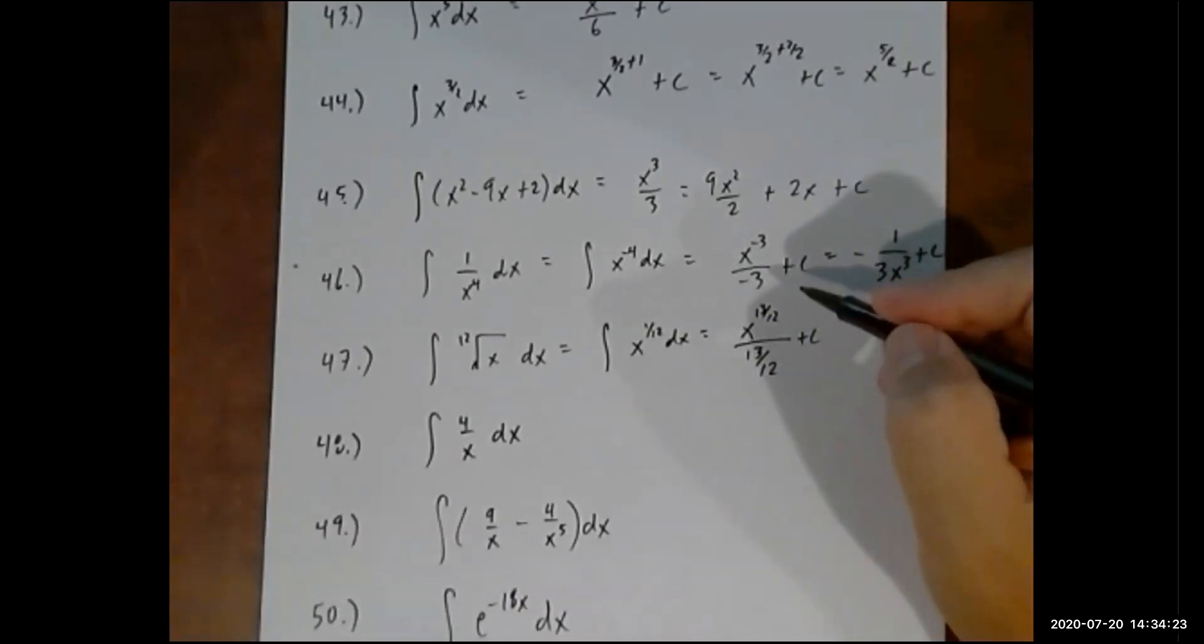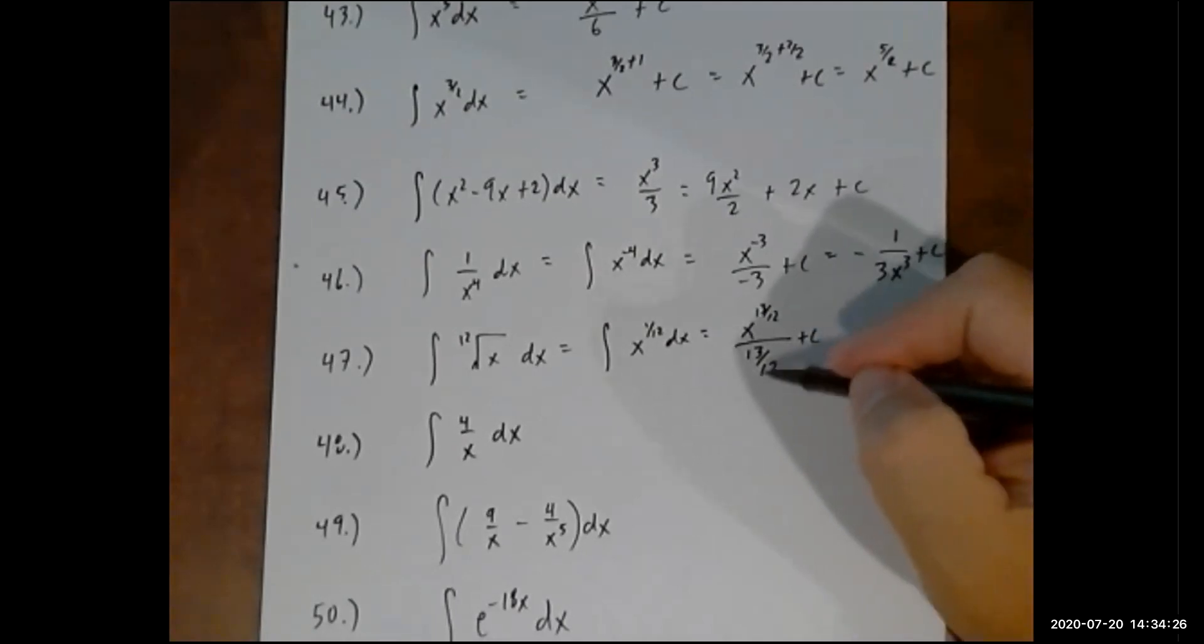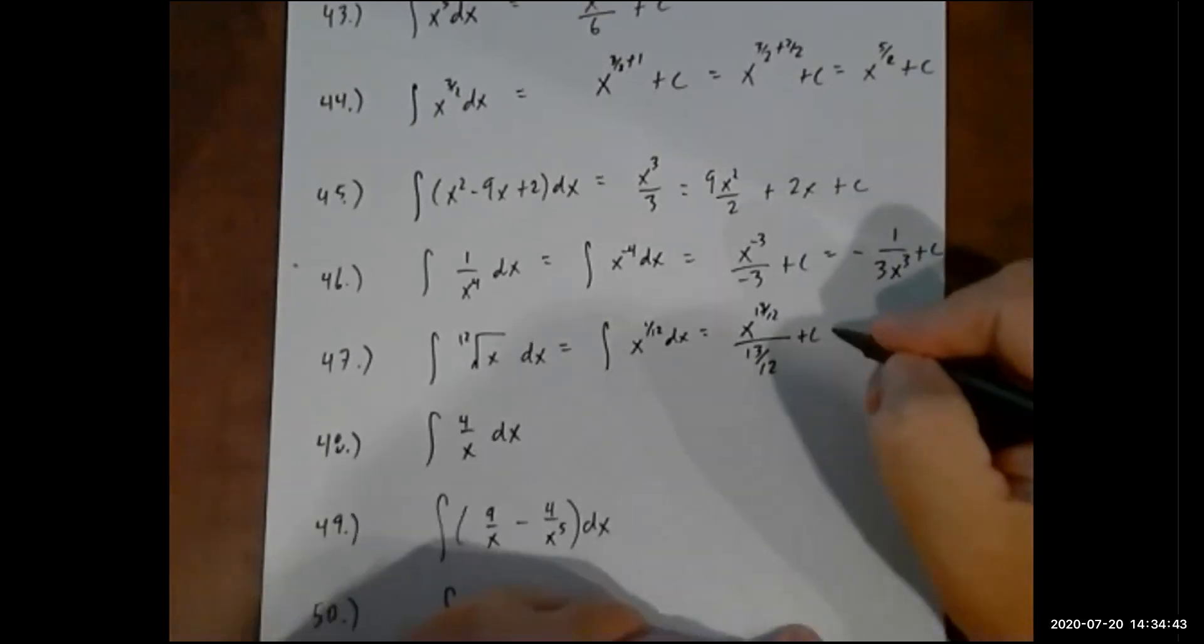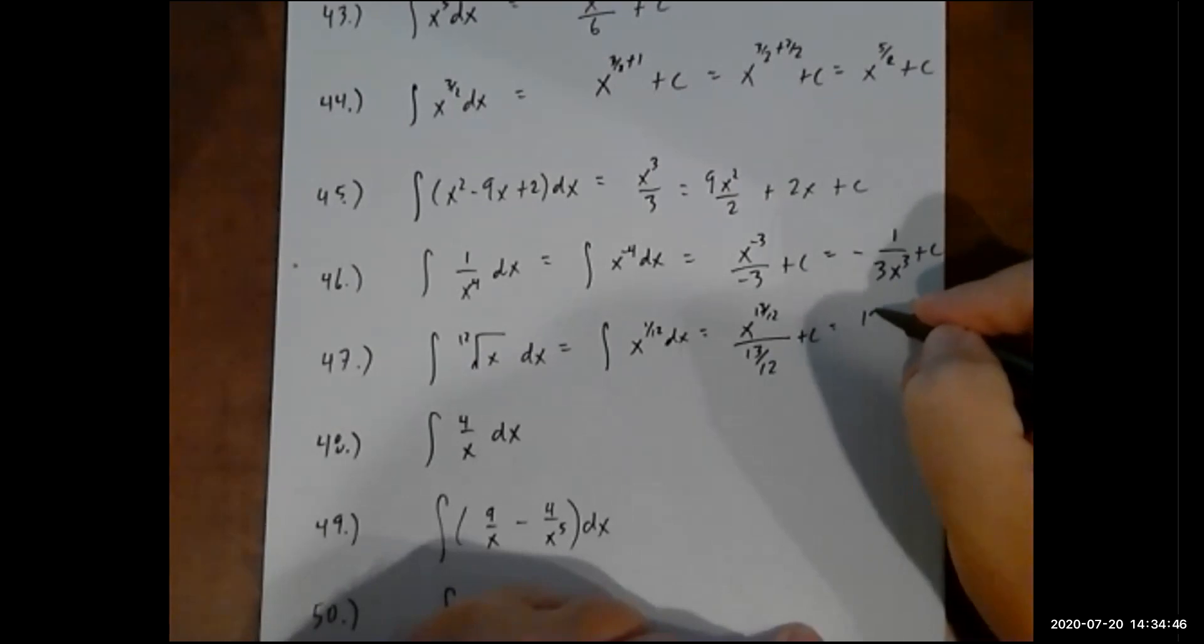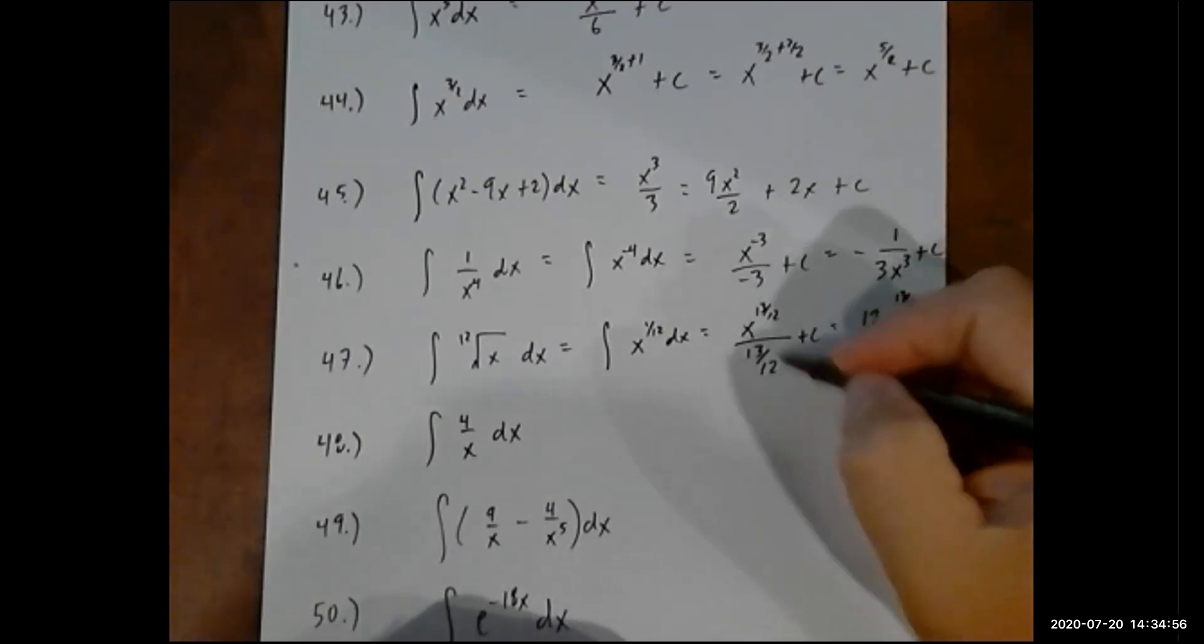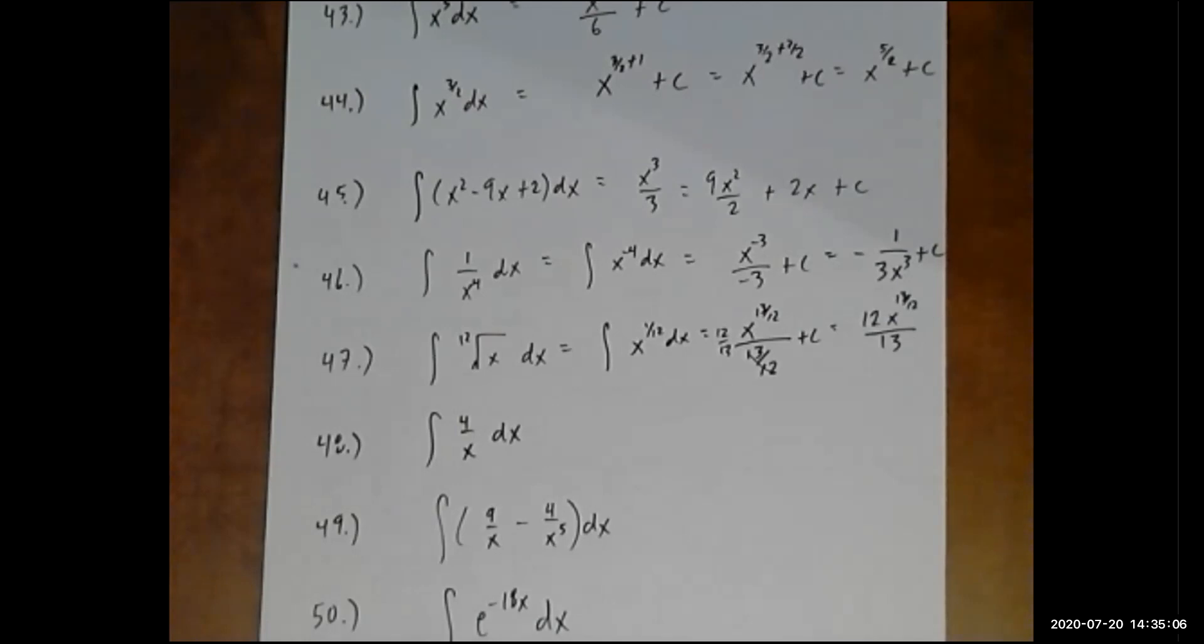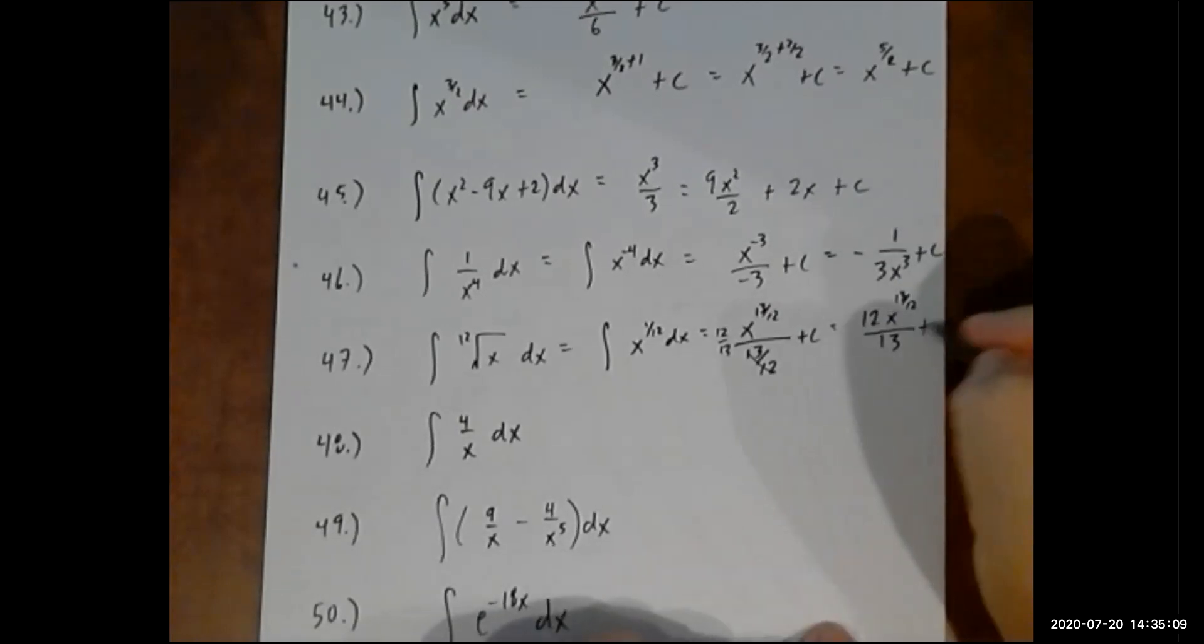Now this is not simplified. Now, one shortcut, because this happens a lot where you end up with a fraction in the denominator, one shortcut is you can simply flip this fraction and multiply it by the top. So this ends up being 12x to the 13 over 12. Because in a sense, you take 13 over 12 and it's almost like you flip it and you multiply the whole thing by 12 over 13. So that's one little shortcut to doing those.